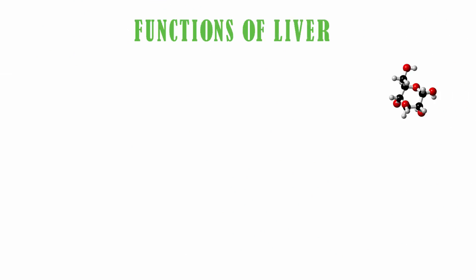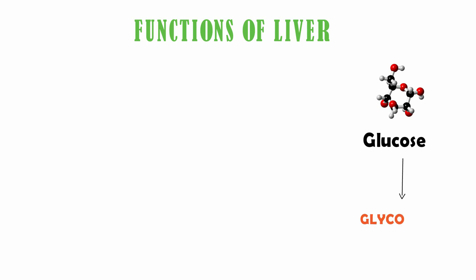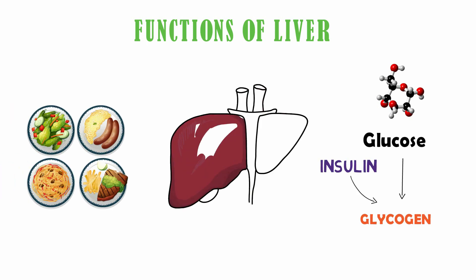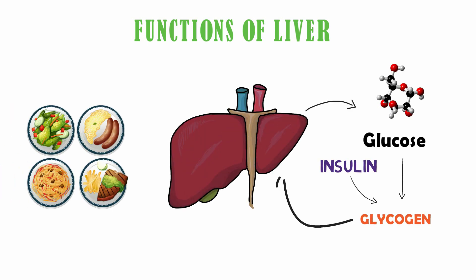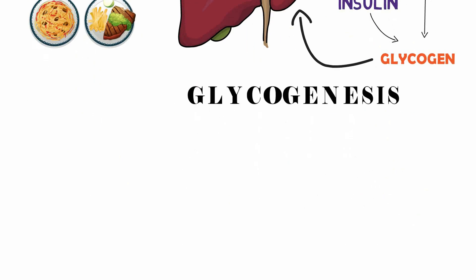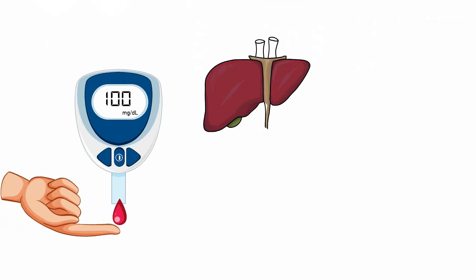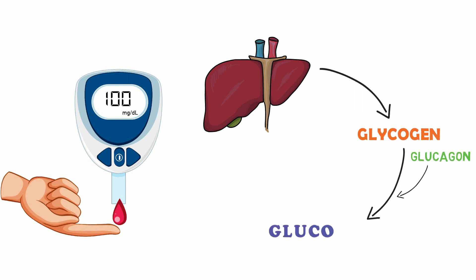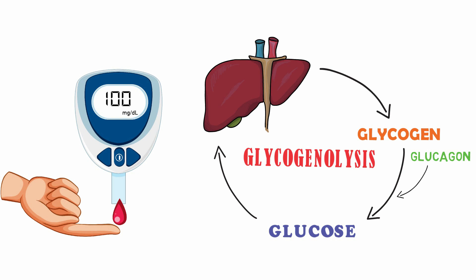Let's discuss the functions of the liver. Surplus glucose is converted into glycogen by the action of insulin after every meal. This process, done by the liver, is called glycogenesis. When the body needs more glucose, the liver breaks down stored glycogen with the help of the glucagon hormone. This process is termed glycogenolysis.